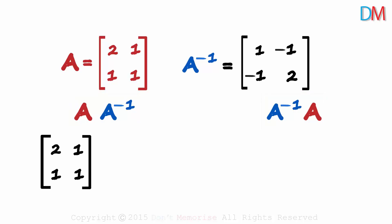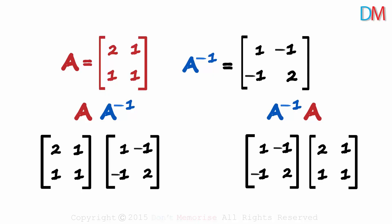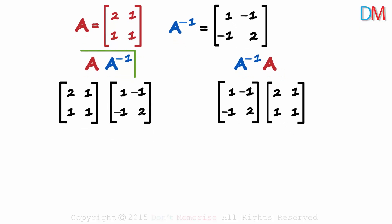This is matrix A multiplied by A inverse. And this is A inverse multiplied by matrix A. We start off by finding the product on the left. What will be the 1 1th element?